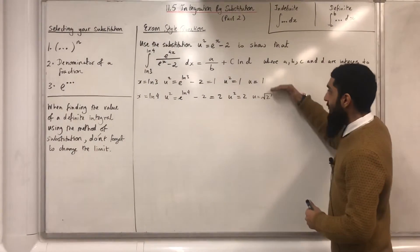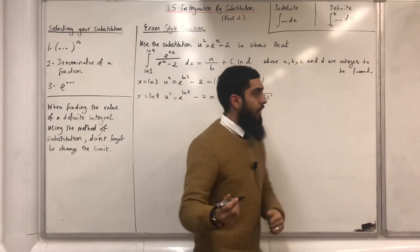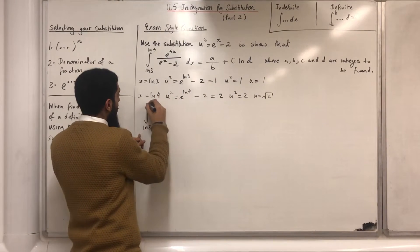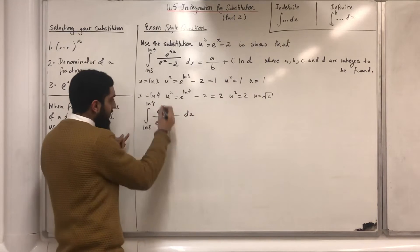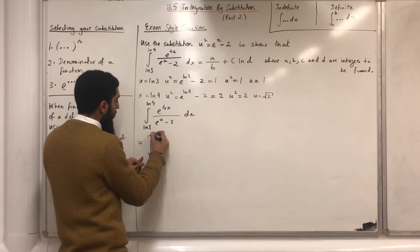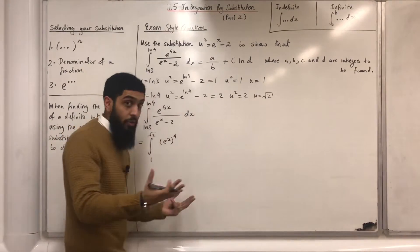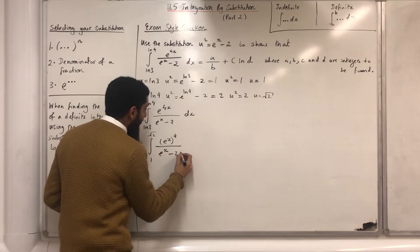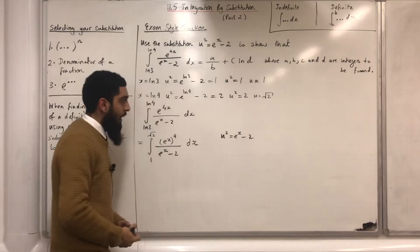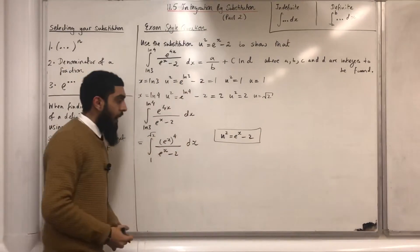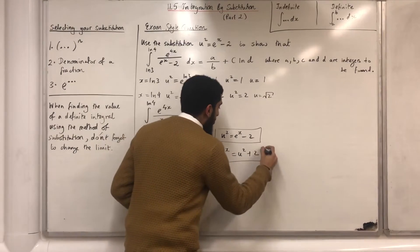Now that the limits are changed, the next step is to rewrite the integral in terms of u. Starting with the integral from ln 3 to ln 4 of e^(4x) over (eˣ − 2) dx. This reduces to the integral from 1 to √2, where e^(4x) can be rewritten as (eˣ)⁴ by laws of indices, divided by (eˣ − 2) dx. From the substitution u² = eˣ − 2, making eˣ the subject gives eˣ = u² + 2.